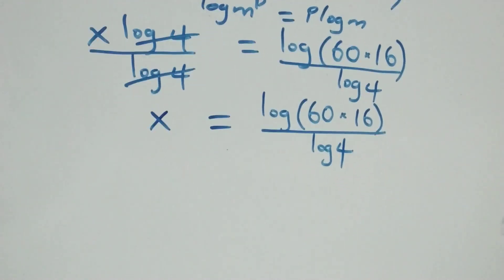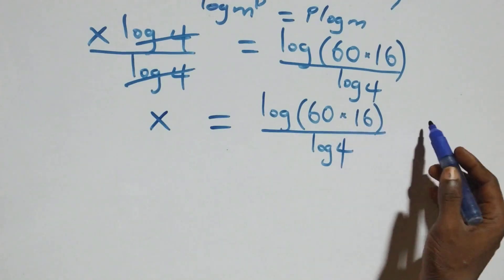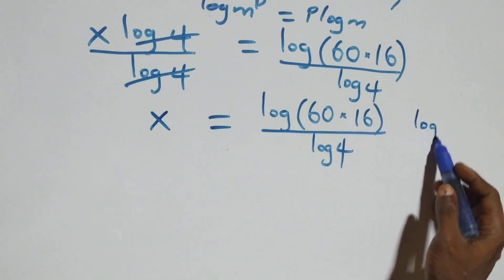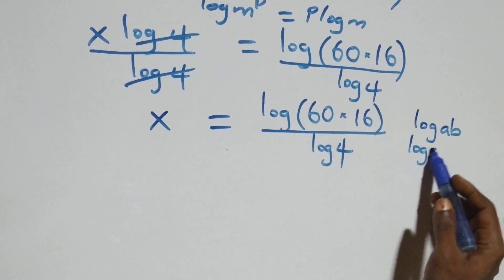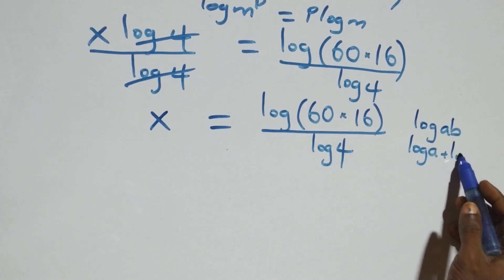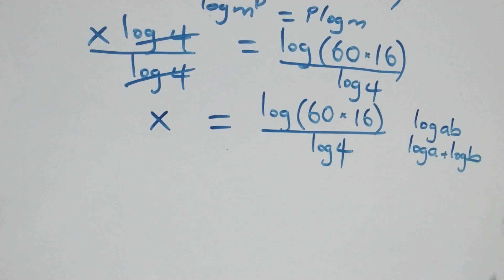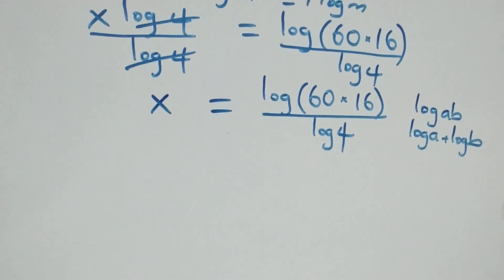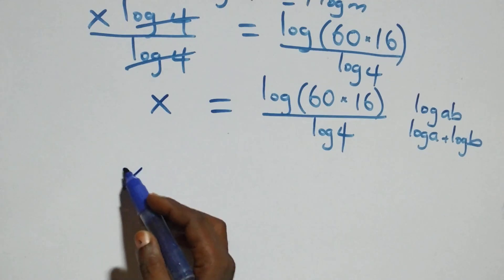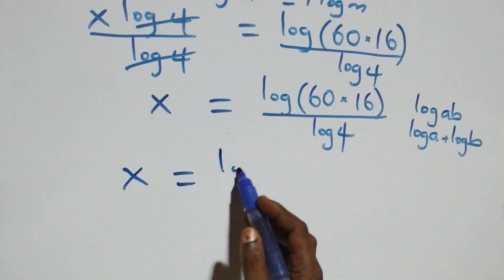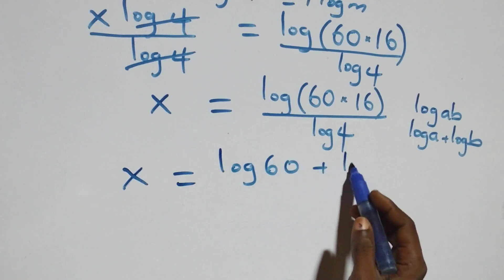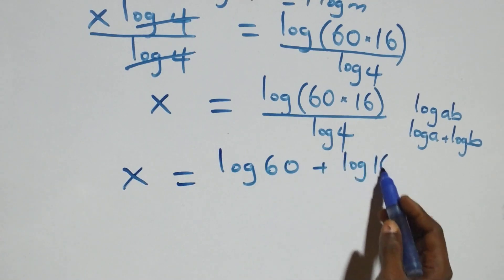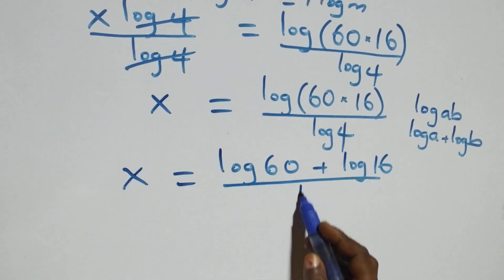From here, we apply the logarithm product rule: log a times b is the same as log a plus log b. So this becomes x equals log sixty plus log sixteen, all over log four.